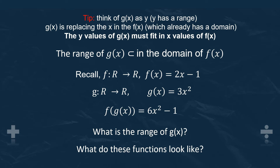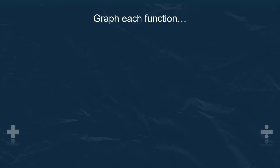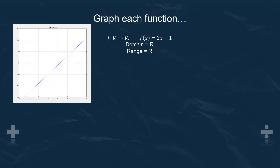Recall our two equations, f of x and g of x, and our composite function. What is the range of g of x? We need to make sure that this fits in the domain of f of x. Graphing these functions really helps to visualise what they look like and helps prove it to both you and your marker. Here we have f of x, 2x minus 1 — just a simple linear line. The domain is all real numbers and the range is also all real numbers.